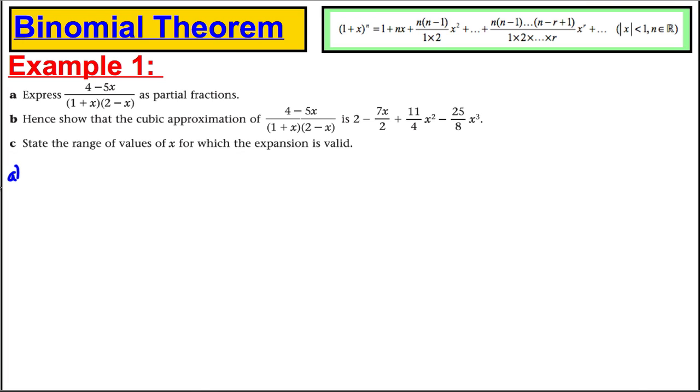So with part A, let's remember our knowledge from chapter 1. We want to write 4 subtract 5x all over 1 plus x times 2 subtract x as partial fractions. Now, the top is linear, the bottom is quadratic. So we know it's a normal partial fractions where we have a constant over the first distinct factor, 1 plus x, and a different constant over the next one, 2 subtract x.